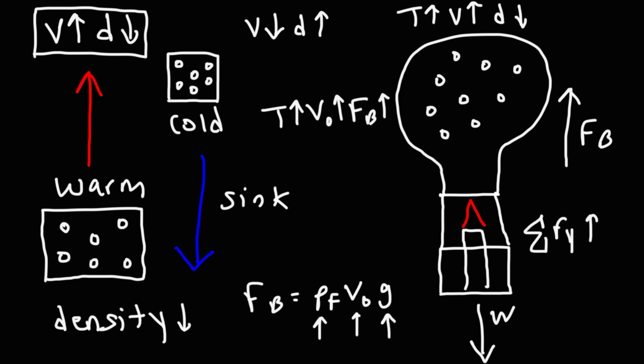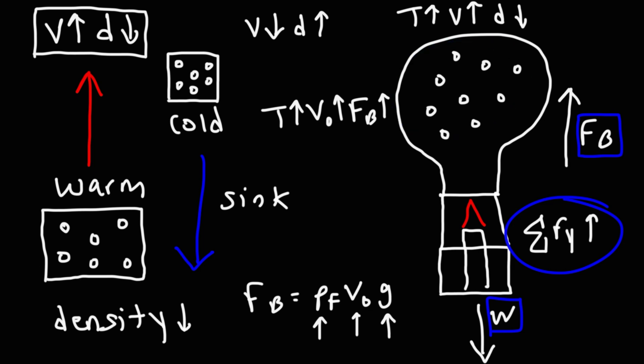If you want the hot air balloon to go up, you need to heat up the air molecules. If you want it to go down, you turn off the heating device, the air molecules cool down, and gradually the hot air balloon will come back down. So that's the science behind how hot air balloons work and how they relate to density.